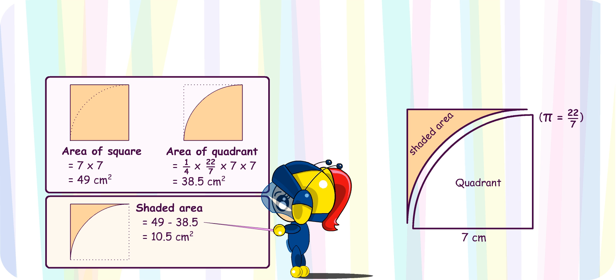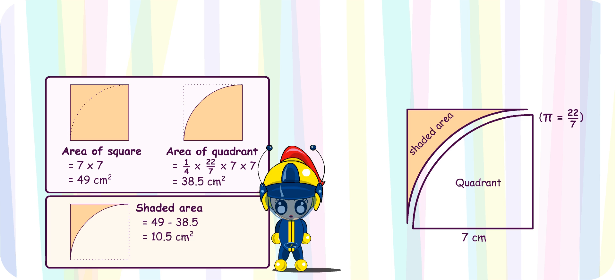So, the shaded area is 49 cm² minus 38.5 cm², which is 10.5 cm². Well done, Turbo Girl!